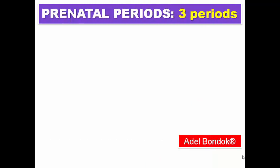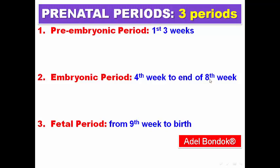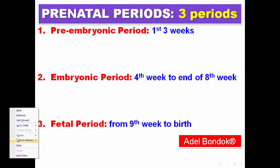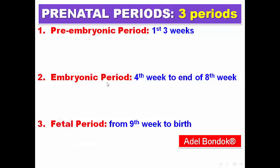The prenatal periods are three: the pre-embryonic period, the embryonic period, and the fetal period. The pre-embryonic period is the first three weeks. The embryonic period is from week four to week nine. The fetal period is from week nine until birth.